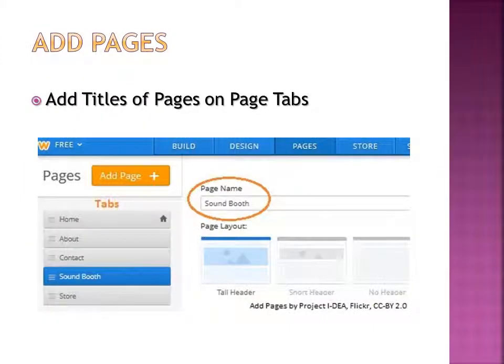Then you can add the pages you want on your website. You might add an about page, a contact page, and more. You just look for the page name box and add your title of the page. These titles will show on the page tabs and people can click on them to open the pages.